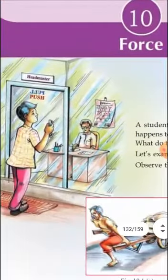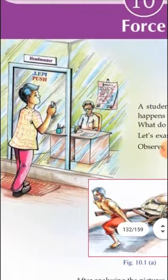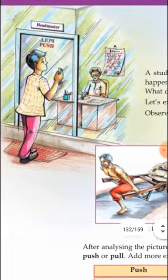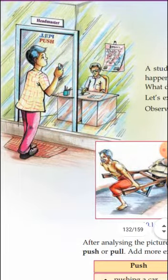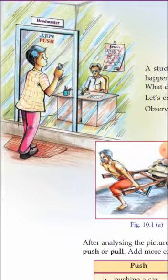Here you can see some pictures. The introduction part of the textbook is given using some pictures. You can see a boy standing in front of the headmaster's room, going to enter. He reads the word on the door: Push. From outside he reads it as push, so he pushes the door and enters the room. While coming out, he reads the word on the door again: Pull. So he pulls the door to come out of the room.